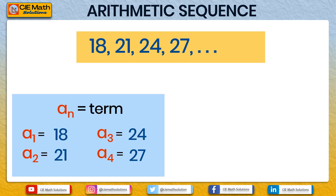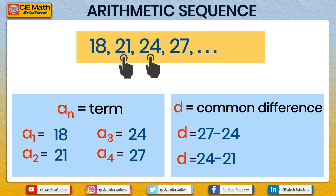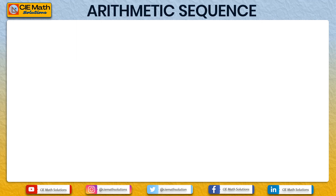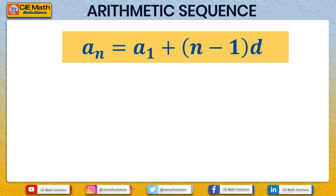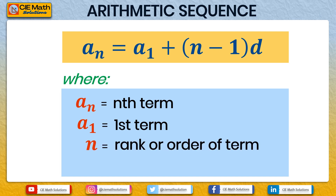The distinguishing characteristic of an arithmetic sequence is having a common difference. We can get the common difference by subtracting any two consecutive terms: 27 minus 24, 24 minus 21, or 21 minus 18. The common difference is equal to 3. The nth term or general term of an arithmetic sequence is given by AN equals A1 plus (N minus 1) times D, where AN is the nth term, A1 is the first term, N is the order of the term, and D is the common difference.